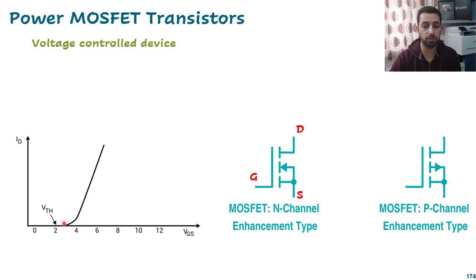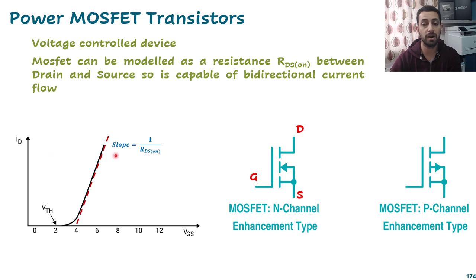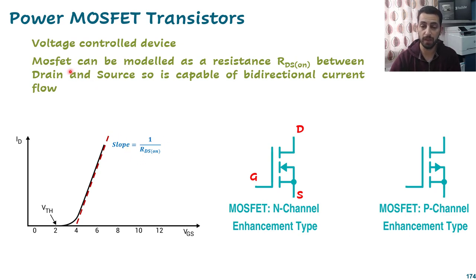In this example, the threshold is about 2.2 to 2.5 volts. After that, raising VGS causes the current to increase more and more. The relation between VGS and current is determined by the RDS_on, which is the reciprocal of that slope and is also mentioned in the datasheet. The MOSFET can be easily modeled as a resistance RDS_on between drain and source.